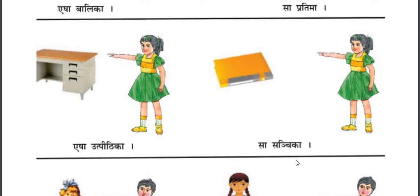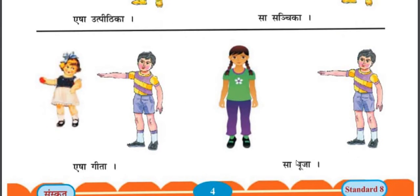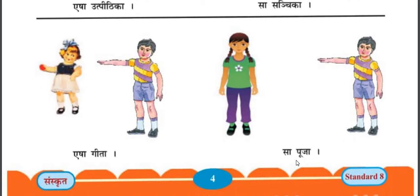Esha Putpithika — this is a Table. Sa Sanchika — that is a File. Esha Gita — this is Gita. Sa Pooja — that is Pooja. You know that we cannot put Article 'A' with a Naming Word or Name.